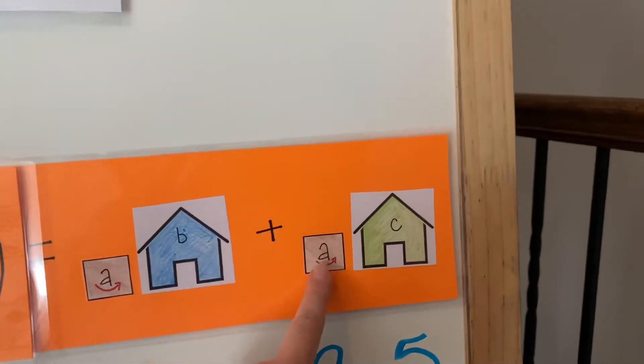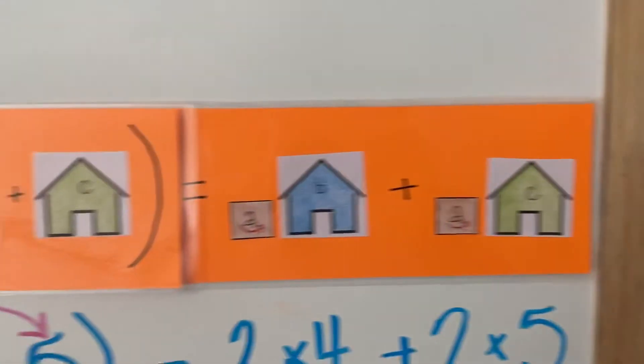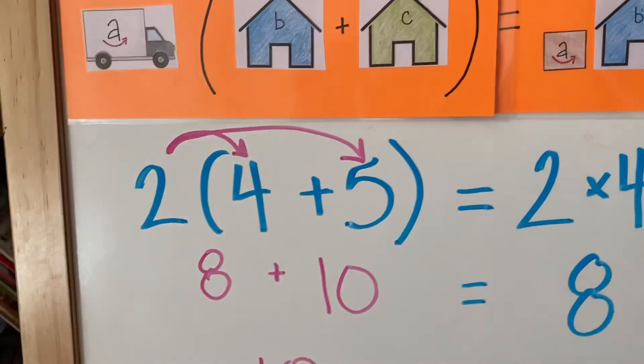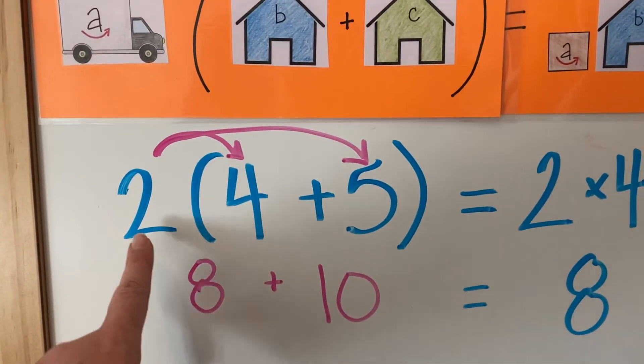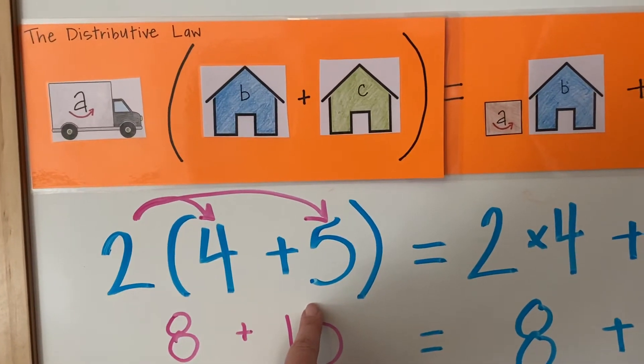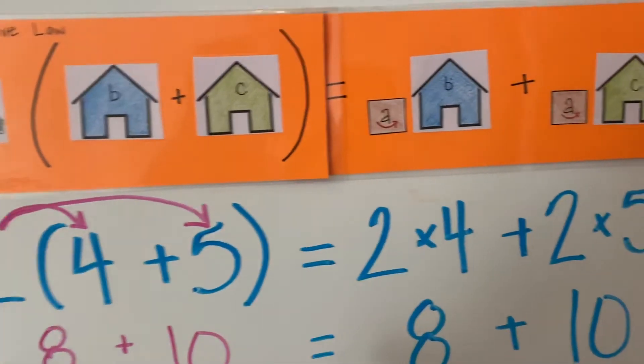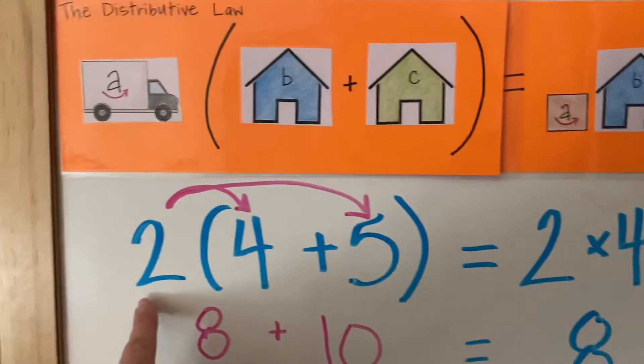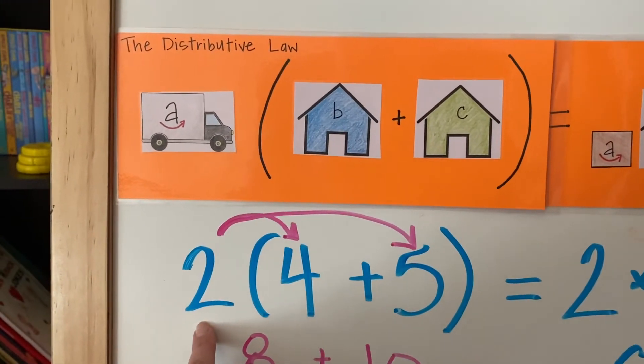Now let's check our theory. Look here: 2 equals a, 4 equals b, c equals 5. I wrote it out here, let's check our theory.